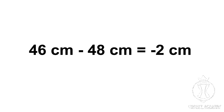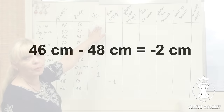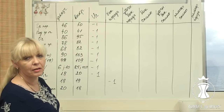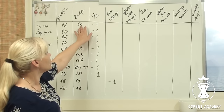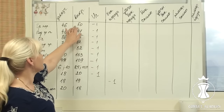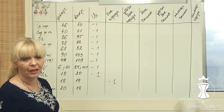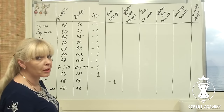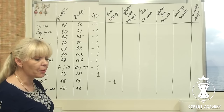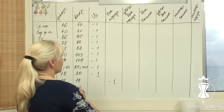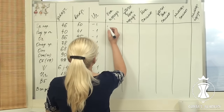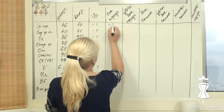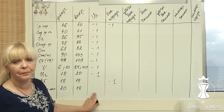Therefore, 46 cm minus 48 cm equals negative 2 cm. I divide it in half for the left and the right side of the front. As the result, I need to narrow the front down by 1 cm from either side at the bust line level to position the side seam correctly on my client's body. I write negative 1 cm in line 1 of column 4.